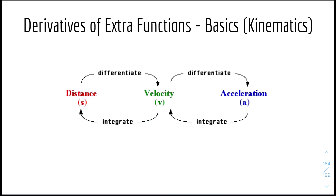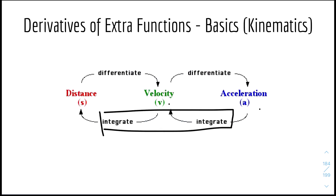Then we have kinematics — some basics. This will just be a starter because we'll look more into kinematics in a later topic. We have distance, velocity, and acceleration, and these three components are interlinked. If you differentiate distance, you get velocity. If you differentiate velocity, you get acceleration. Conversely, if you integrate acceleration, you get velocity, and if you integrate velocity, you get distance. We haven't covered integration yet but we'll cover it next lesson. Basically all three functions are expressed as d-something over dt.